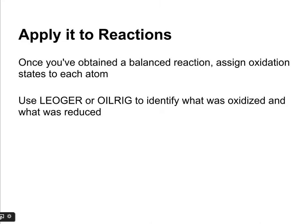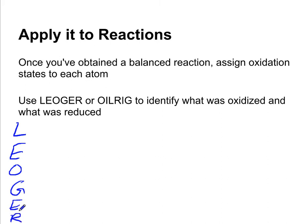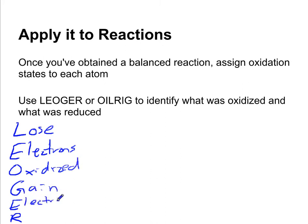We can apply these oxidation states or oxidation numbers to reactions. Once we balance a reaction, we assign oxidation numbers to each atom as we just did, and then use the acronyms LEO-GER or OIL-RIG to identify what was oxidized and what was reduced in the reaction. Let's look at these.